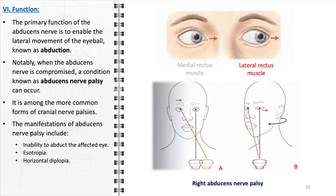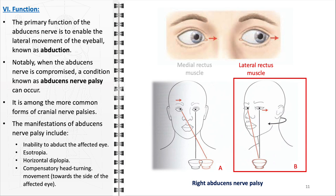The patient perceives two side-by-side images due to the lack of coordination between the two eyes, a symptom most pronounced when attempting to look sideways. Moreover, patients with abducens nerve palsy may adopt a compensatory head-turning movement towards the side of the affected eye. This involuntary adjustment is a coping mechanism to align the eyes, reduce diplopia, and improve visual focus.